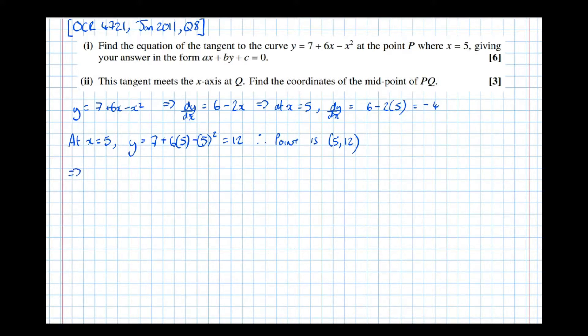This now implies, well, we've got the gradient minus 4, and we've got a point (5, 12). So using the formula y minus y₁, so the y coordinate is 12, equals m times x minus x₁.